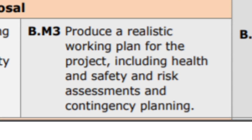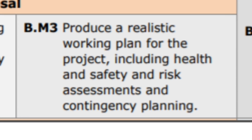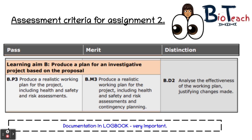For the merit part of this assignment you need to include something known as contingency planning. You need to basically talk about issues that you had in the planning and how you overcame them. The issues could be to do with equipment — say if something wasn't working, or it stopped working, or you didn't know how to use it, something along those lines.